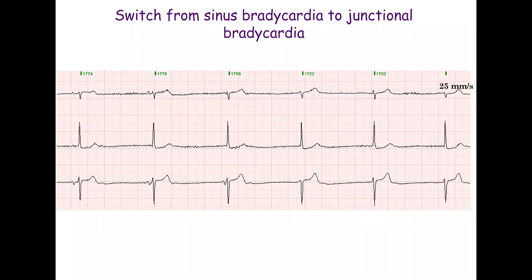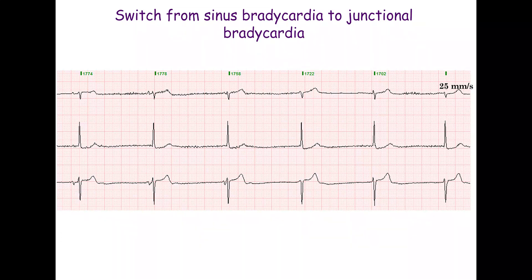The first QRS complex is of sinus origin. The PR interval before the second and third QRS complexes is shortened, indicating junctional escape. All QRS complexes except the first are junctional.